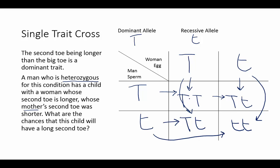So when we look at our four squares in the Punnett square, we have: two large T's (homozygous dominant), a large T and small t (heterozygous), another large T and small t (heterozygous), and two small t's (homozygous recessive). Because the dominant allele produces a long second toe, both the homozygous dominant and heterozygous conditions will result in a long second toe. That means there is a one in four chance the child is homozygous dominant, and a two in four chance the child is heterozygous — three out of four chances result in a long second toe.